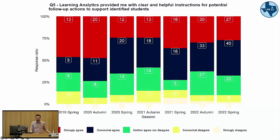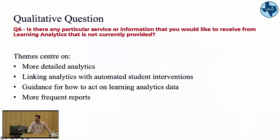We also ask a qualitative open-ended question. Without going into full detail, themes emerging include requests for more detailed analytics, automated student interventions, more guidance on how to act on the reports, and more frequent reports.